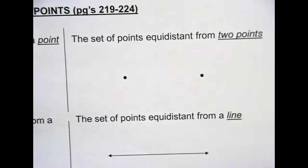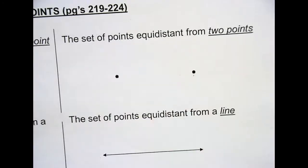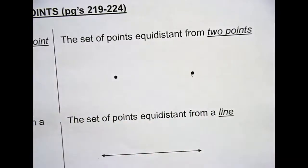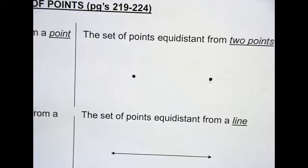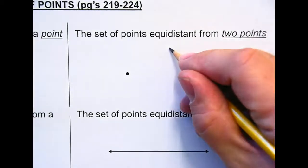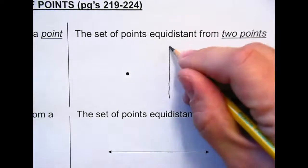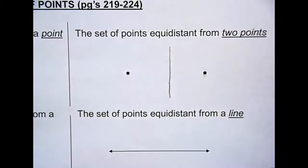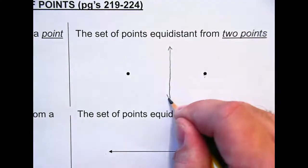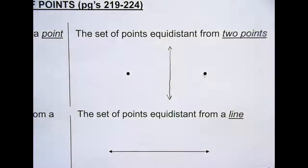A set of points equidistant from two points. Let's say this was one goal post on a football field and this is another goal post. Where could you stand on that football field that would be equidistant from both of those goal posts? Talk with your neighbor about it. On the 50-yard line.